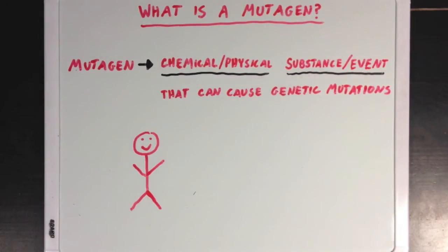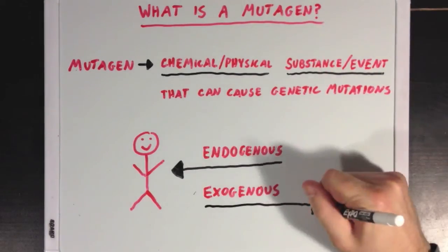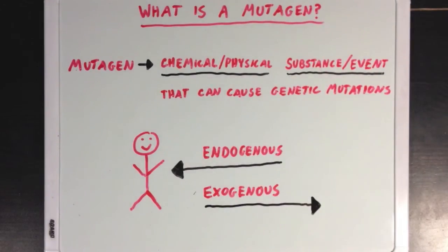A mutagen could be classified as endogenous if it comes from inside a person's body — something already found in the organism. But an exogenous mutagen is one that comes from outside the affected organism, something from the external environment.